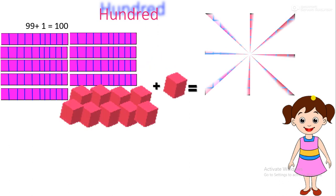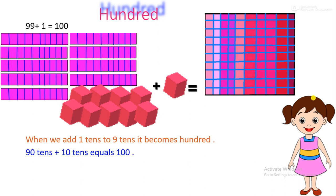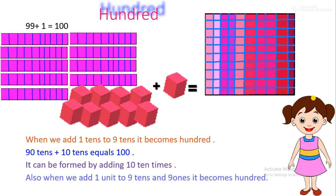When we add 1 tenth to 9 tenths, it becomes 100. 90 tenths plus tenths equals to 100. It can be formed by adding 10 tenths times. Also, when we add 1 unit to 9 tenths and 9 ones, it becomes 100.